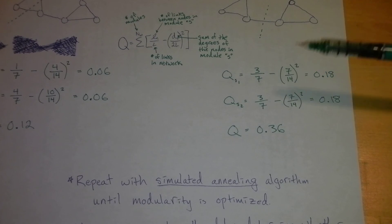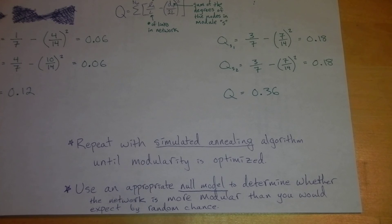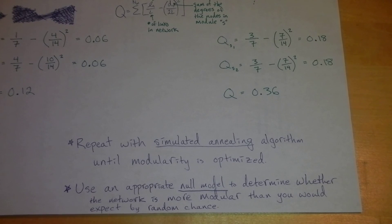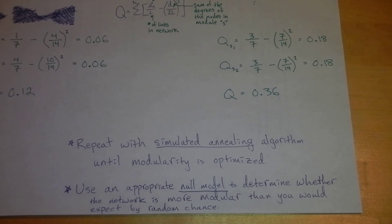One thing I want to point out is that this value of modularity in and of itself is a bit meaningless. It's really important to use an appropriate null model to determine whether the network is more modular than you would expect by random chance. The value that you actually get there is this measure called the relative modularity. Talking about null models is outside of this tutorial, but essentially it controls for the diversity and connectance within a network to see if you're observing a network that's more modular.